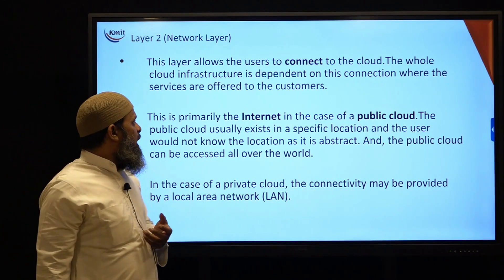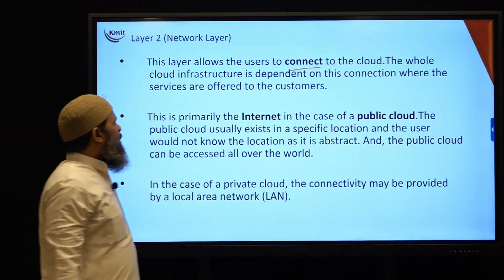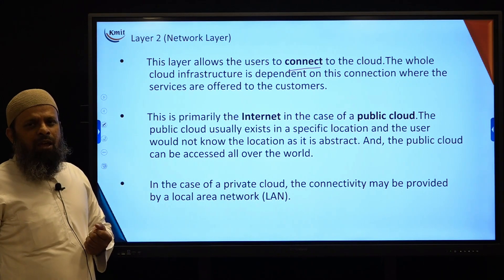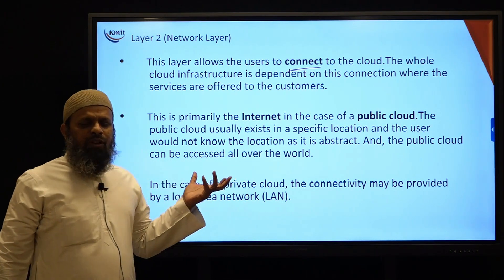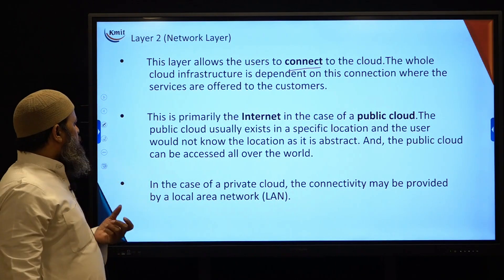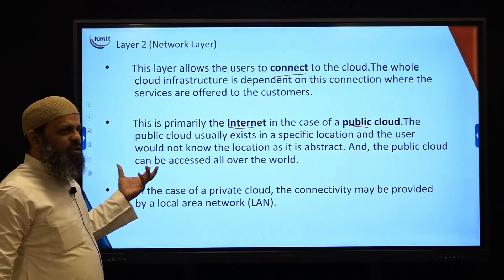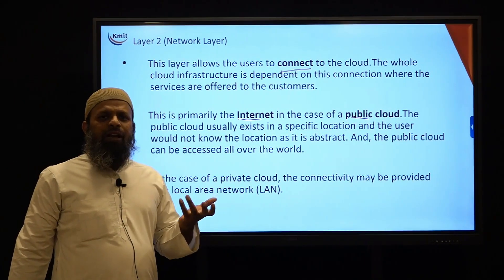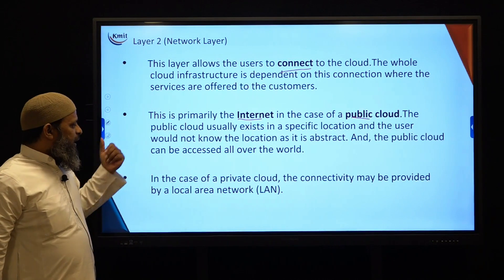The second layer is the network layer. This is the layer through which the client gets connected to the cloud. The whole cloud infrastructure is dependent on this connection, through which services are offered to customers. Without internet you cannot connect to the cloud. The network layer is primarily the internet in the case of public cloud, since public cloud can be available anywhere on any system in the world, and you need internet to connect to it.